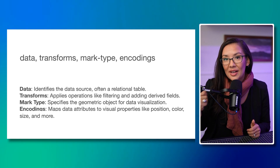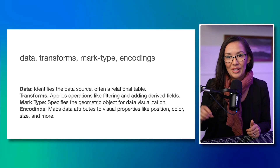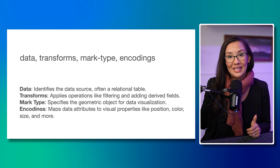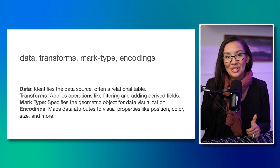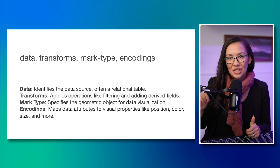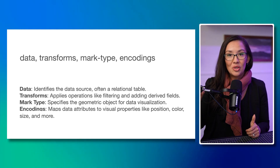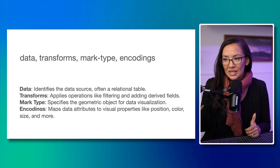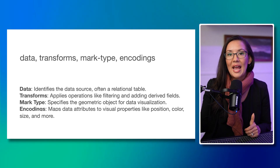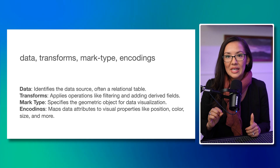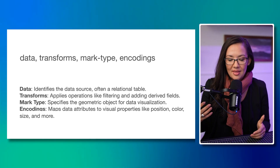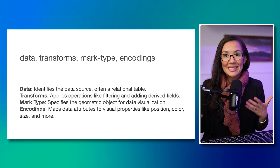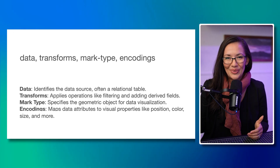You can modify a mark type with an encoding. For example, if you have a line chart, you can make the line — which is the mark type — different by changing the encoding. You can make it thicker or thinner, or change the color. The mark type is the physical element and the encoding is the visual aesthetics that you apply to it. You can think of it a little bit like CSS for visualizations.